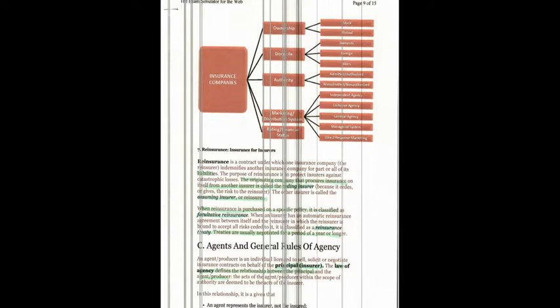An agent or producer is an individual licensed to solicit or negotiate insurance contracts on behalf of the principal insurer. The law of agency defines the relationship between the principal and the agent. The acts of the agent within the scope of authority are deemed to be acts of the insurer. In this relationship, an agent represents the insurer, not the insured.